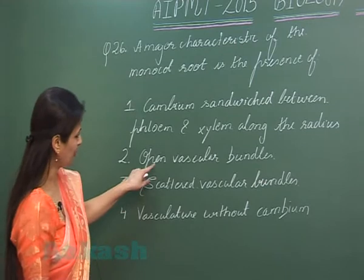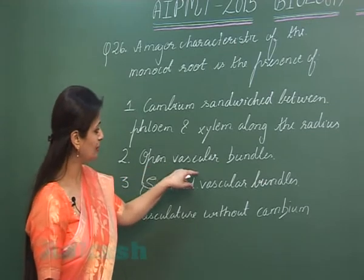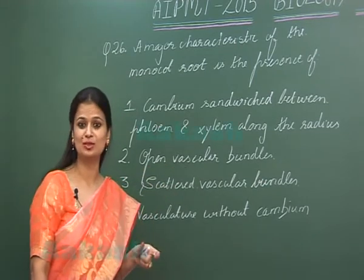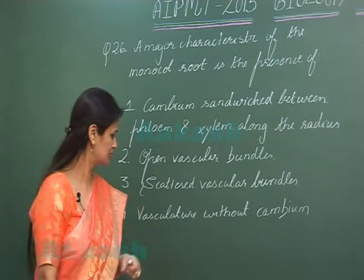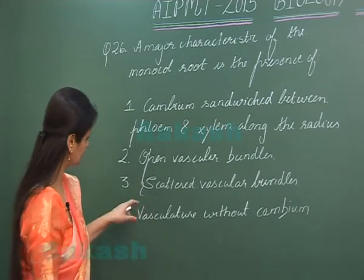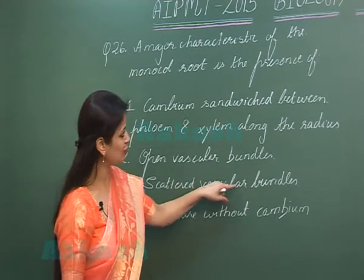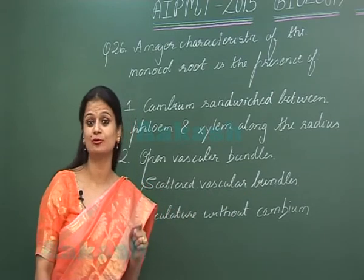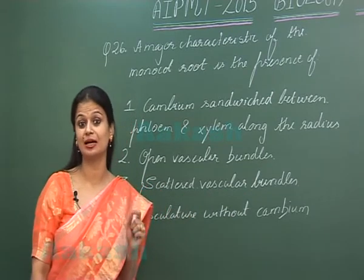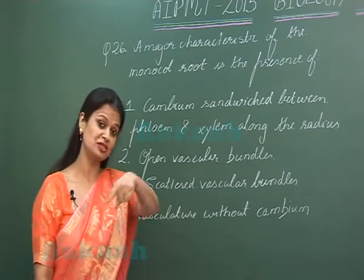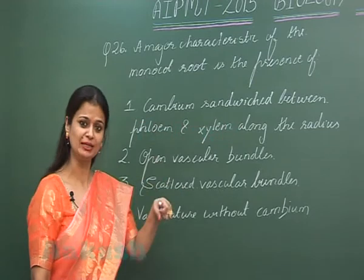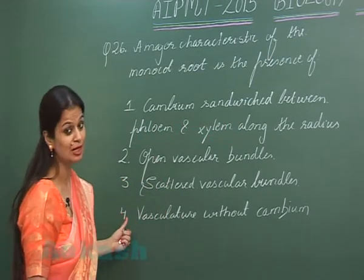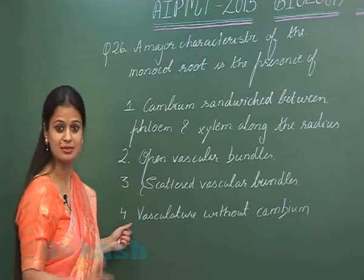The second option is open vascular bundles. Since cambium is absent, you call these vascular bundles closed, not open. The third option is scattered vascular bundles — in the monocot root, the vascular bundles are radially arranged in the form of a ring.